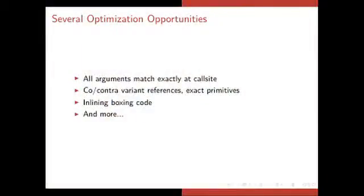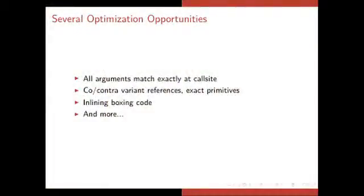And at first, this might look very heavy and expensive. But it turns out there are many different ways you can optimize this code. For example, if all arguments match exactly at the call site compared to the target, then you can do a single compare to see if this is the correct target. If you have co-contra variant references, and all the rest of the primitives are exactly the same, you can do a quick lookup of co-contra variants and use that to calculate that, yes, it's safe to jump to this method. And if we actually have to box, as we did in the last example, we can inline the boxing code and make it reasonably efficient anyway.